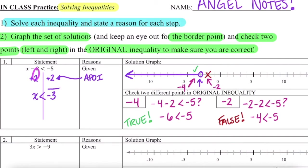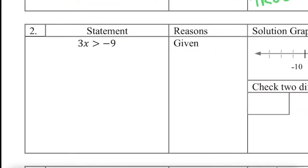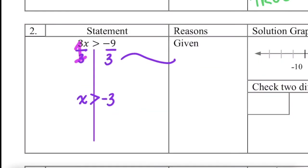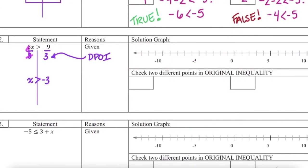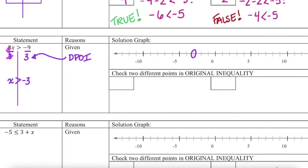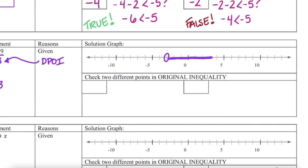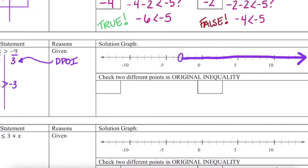I'll put a box around my final inequality statement to show I have found the correct solutions for x. For number 2, I start by putting a line down the middle of the inequality and solve it the same way I would solve an equation — my goal is to isolate x. In an equation this would be called the division property of equality, but since we're dealing with inequality, we call this the division property of inequality, or DPOI. Now that x is isolated, I represent all solutions on the graph with an open point on negative 3, and since x is greater than negative 3, all solutions are to the right. Now, just like in the last example, we need to check two points — one on the left and one on the right.